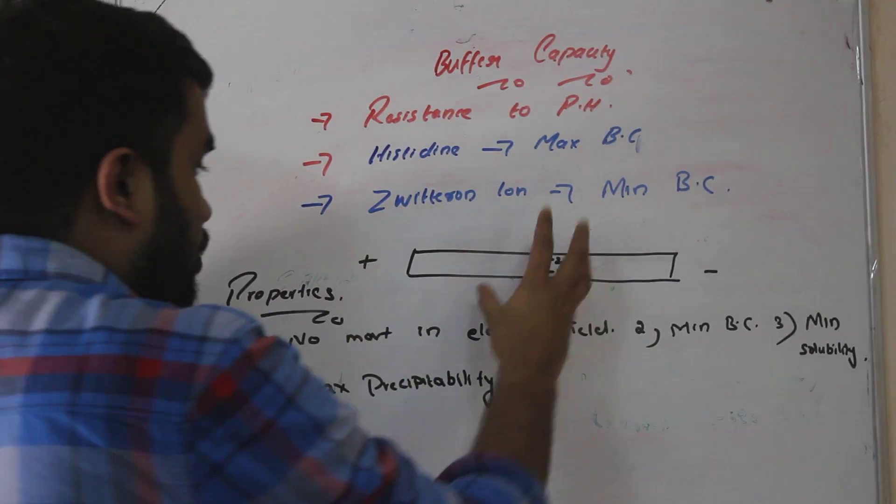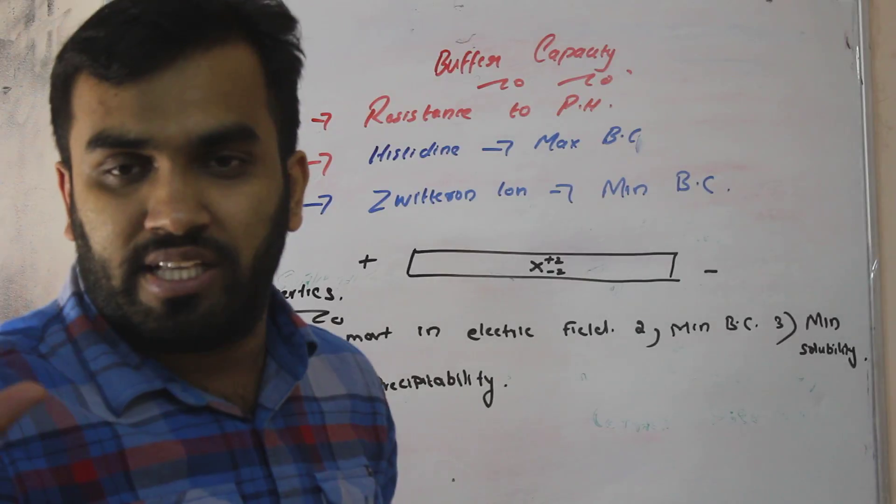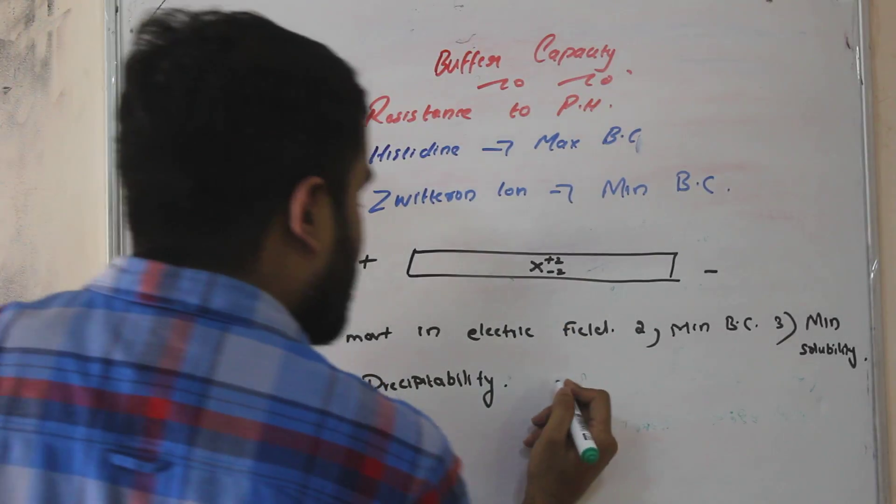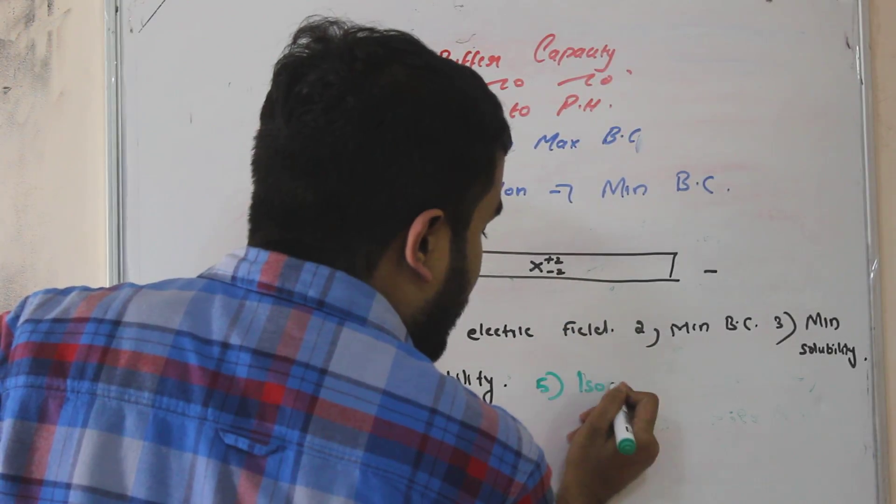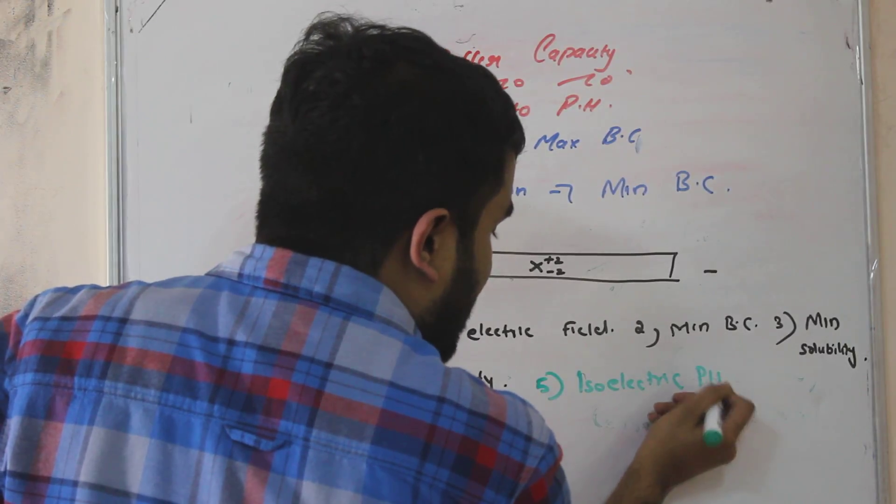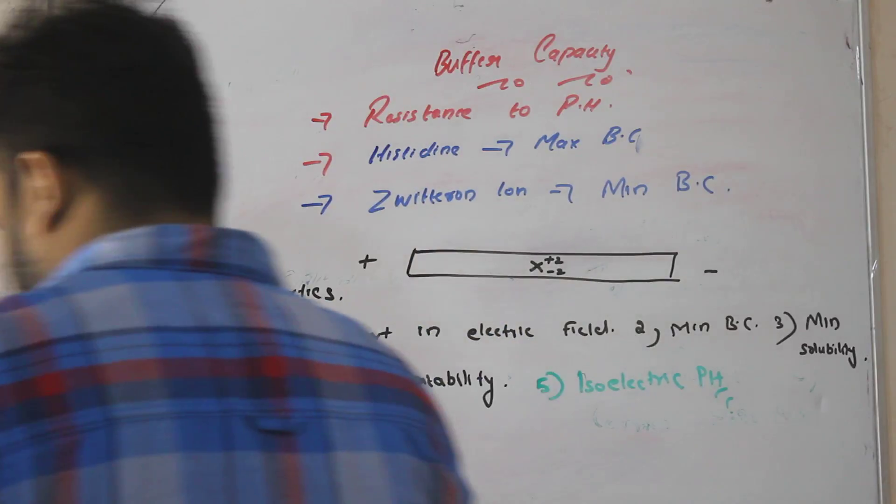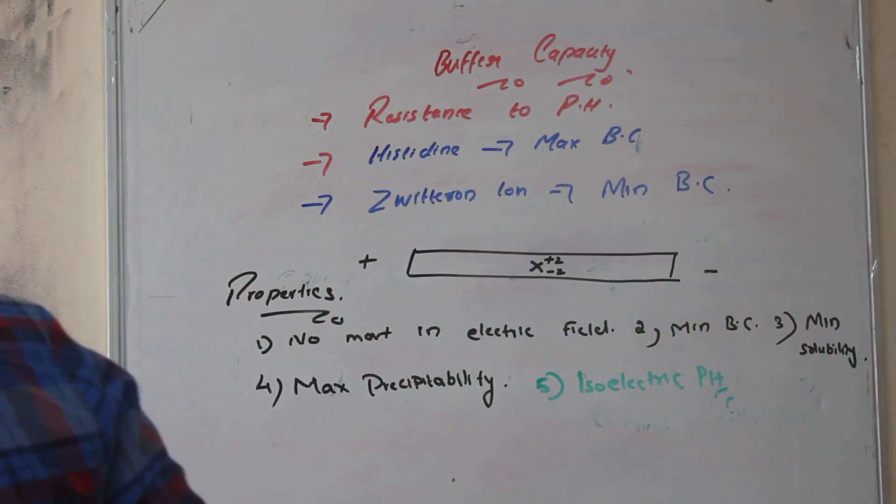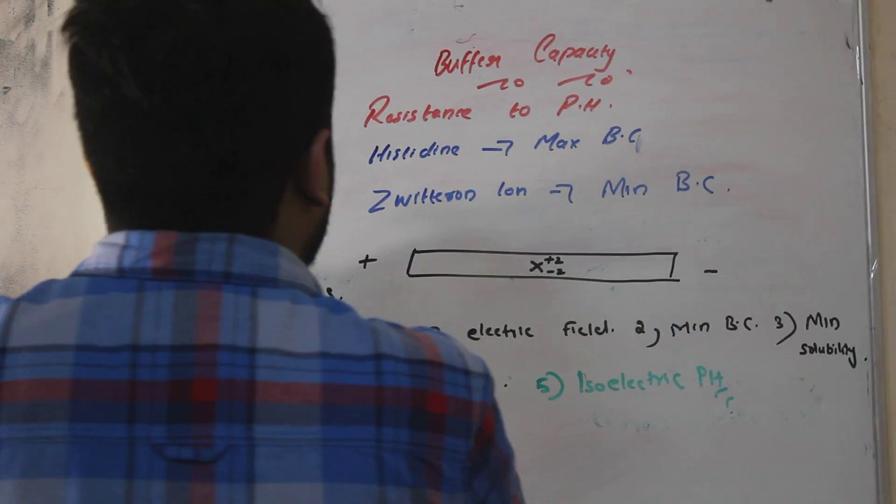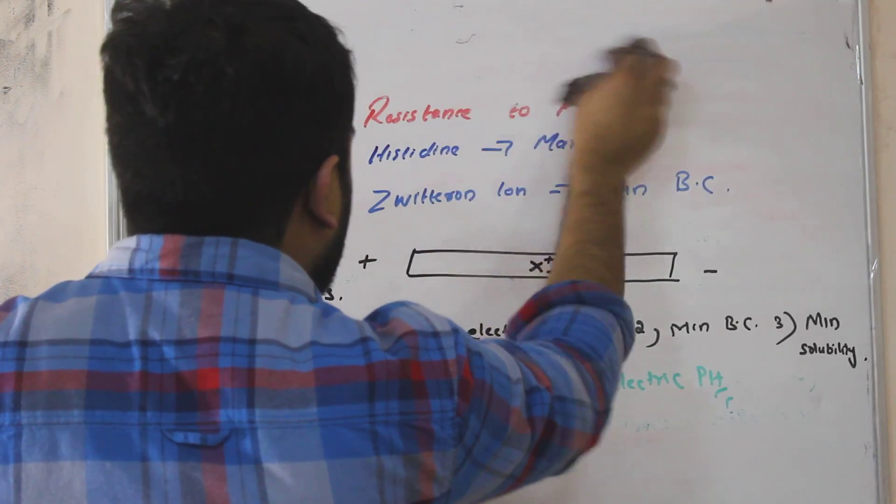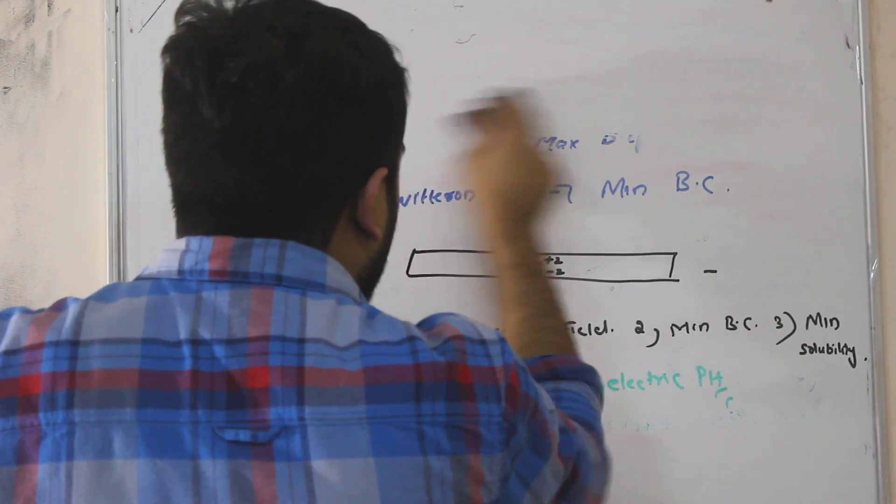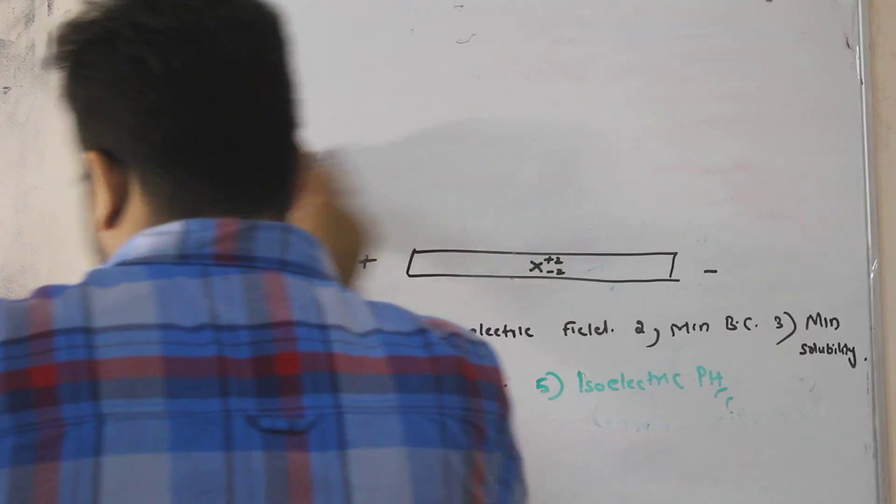Now this zwitterion, it is formed in a particular pH. That pH is known as isoelectric pH. What is isoelectric pH? The pH at which that zwitterion is formed. Now in the earlier classes, in our lower cost two classes, we have studied an equation known as Hasselbalch-Henderson equation, right?